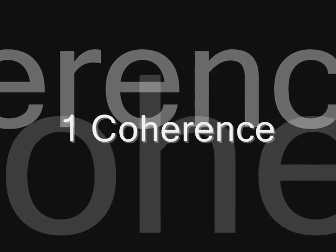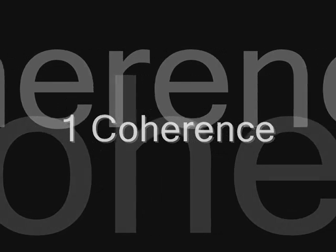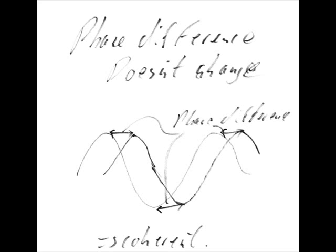A pair of waves are said to be coherent if the phase relationship between them is constant. We have discussed phase before — it is the comparison of two waves with the same frequency. If a pair of waves are antiphase, then one peaks and the other drops. In order for waves to be in phase, they must have the same frequency.